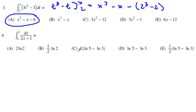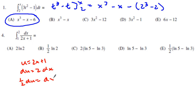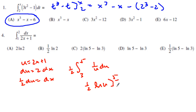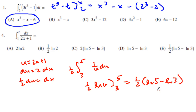Number 4 — I like using u substitution here. u equals 2x plus 1, so du equals 2 dx, meaning one half du equals dx. Plugging in the lower limit 1 gives 3, and the upper limit 2 gives 5. I have one half times the integral of 1 over u du from 3 to 5, which gives one half of natural log of u. That becomes one half of natural log of 5 minus natural log of 3, which equals one half of natural log of 5 thirds.